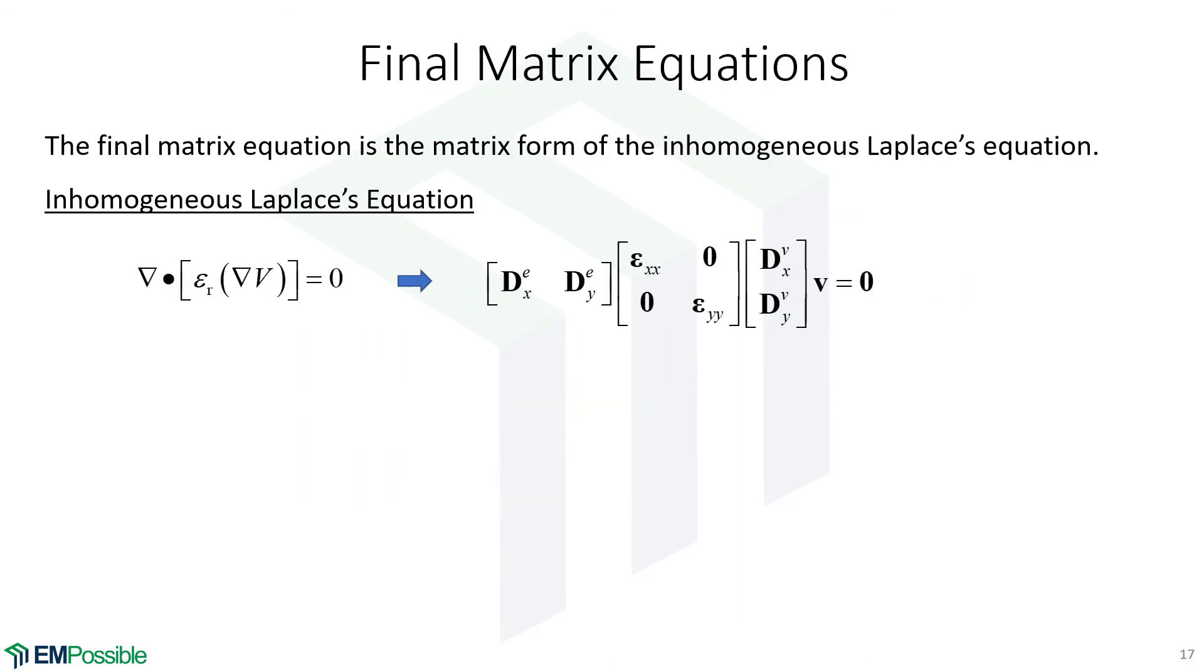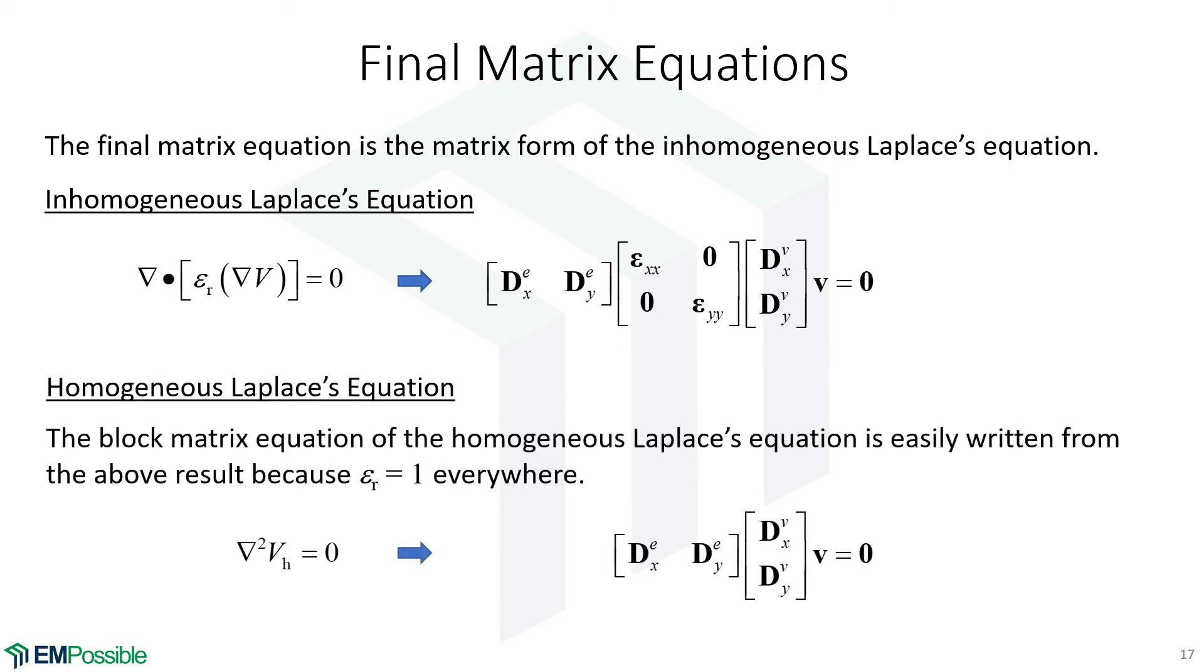Here are our final matrix equations. In prior videos, we derived the inhomogeneous Laplace's equation, the analytical equation. We just derived the matrix form of that. What's neat is with staggered derivatives, we can just leave it in this form. We don't have to do any kind of product rule or expand it any further. We just enter it like that and let MATLAB do all the thinking for us. We also needed the homogeneous Laplace's equation. That really is the same as this equation, it's just that our relative permittivity is all ones. This becomes the identity matrix and drops out. So here is the matrix form of the homogeneous Laplace's equation. We'll solve the first one to get distributed capacitance and the second one to get distributed inductance.